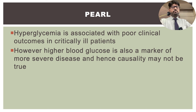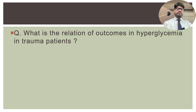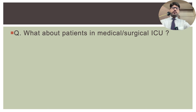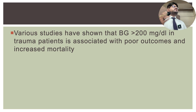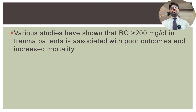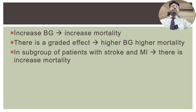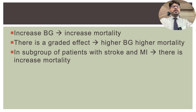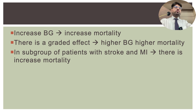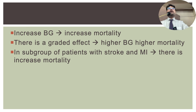Extremes of blood sugar — whether very high, such as 400-500, or frank hypoglycemia — both lead to poor clinical outcome. Hyperglycemia and hypoglycemia are not only markers of the patient's clinical state but also markers of overall outcome. In trauma patients, blood sugar greater than 200 is associated with poor outcome. In both medical and surgical ICUs, elevated blood sugar is directly associated with increased mortality — a graded effect: higher blood glucose, more mortality.